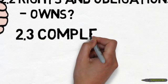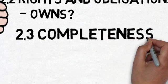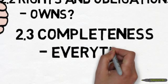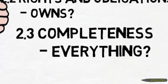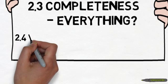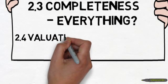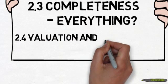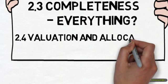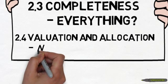Completeness: all the assets, interests, and obligations of the entity that required recording have been recorded in the financial statements. Valuation and allocation: all the assets, obligations, and equity interests have been valued appropriately, and if any allocation was needed, it has been done.